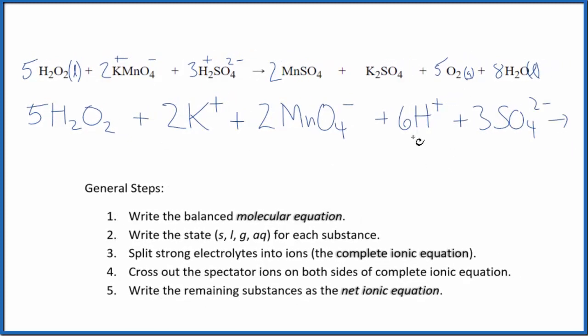So these are the reactants in our net ionic equation. For the products, we said the whole sulfate is two minus, so the manganese ion has to be two plus. So we have two of the manganese ions, manganese two ions we should call them, plus two sulfates.